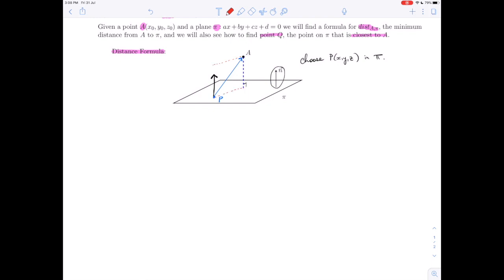We are going to take our vector PA and project it over. My vector in red is going to be the projection of PA onto the normal vector. That is going to scale the normal vector so that it is the same length as the distance that we are looking for.